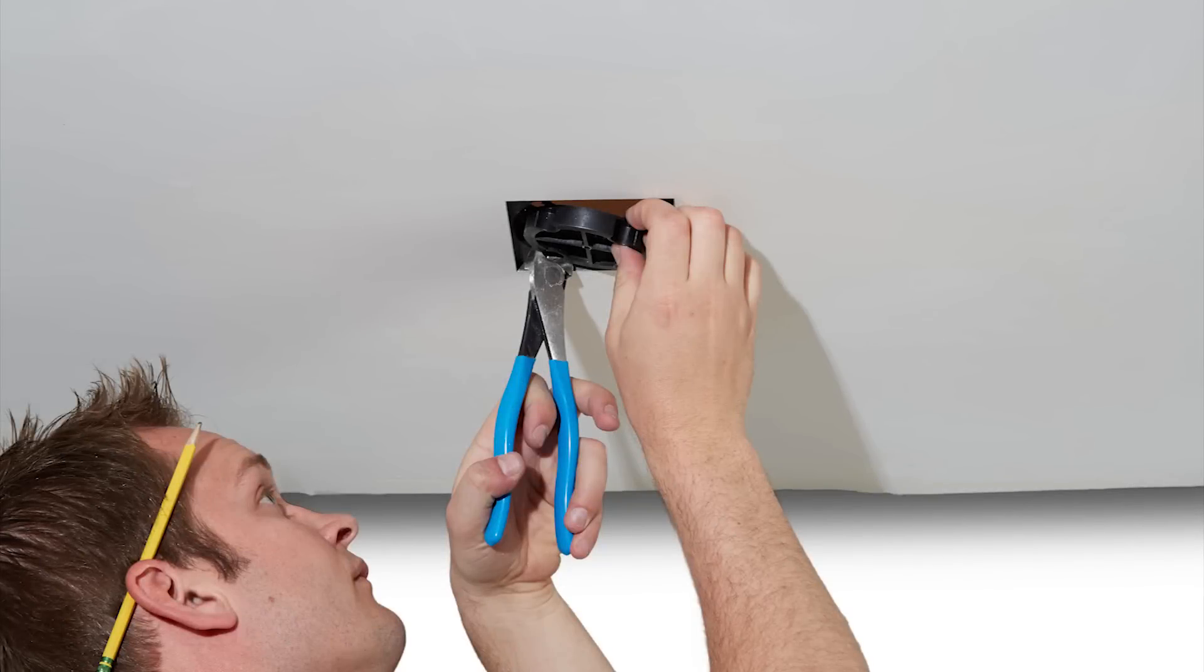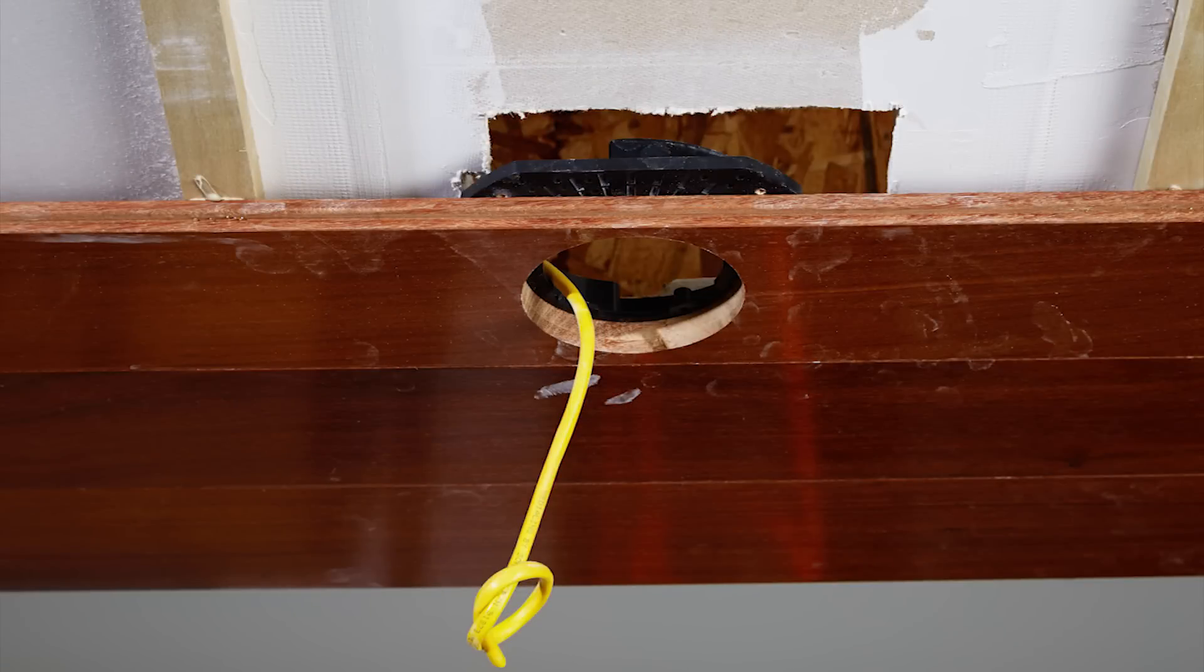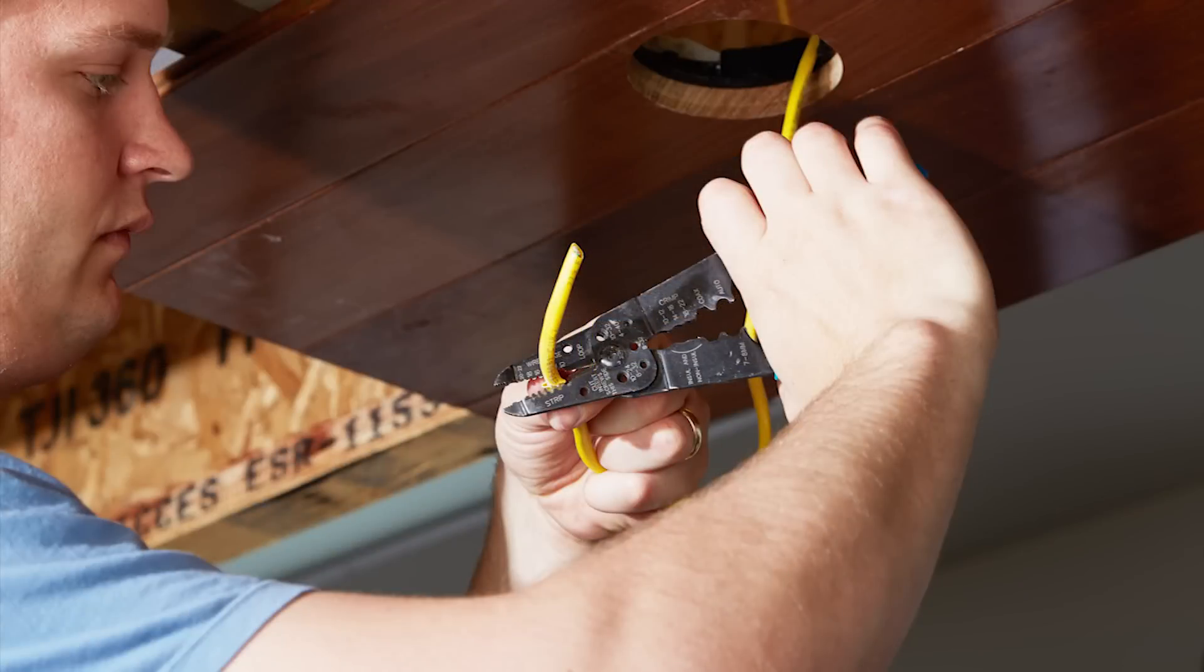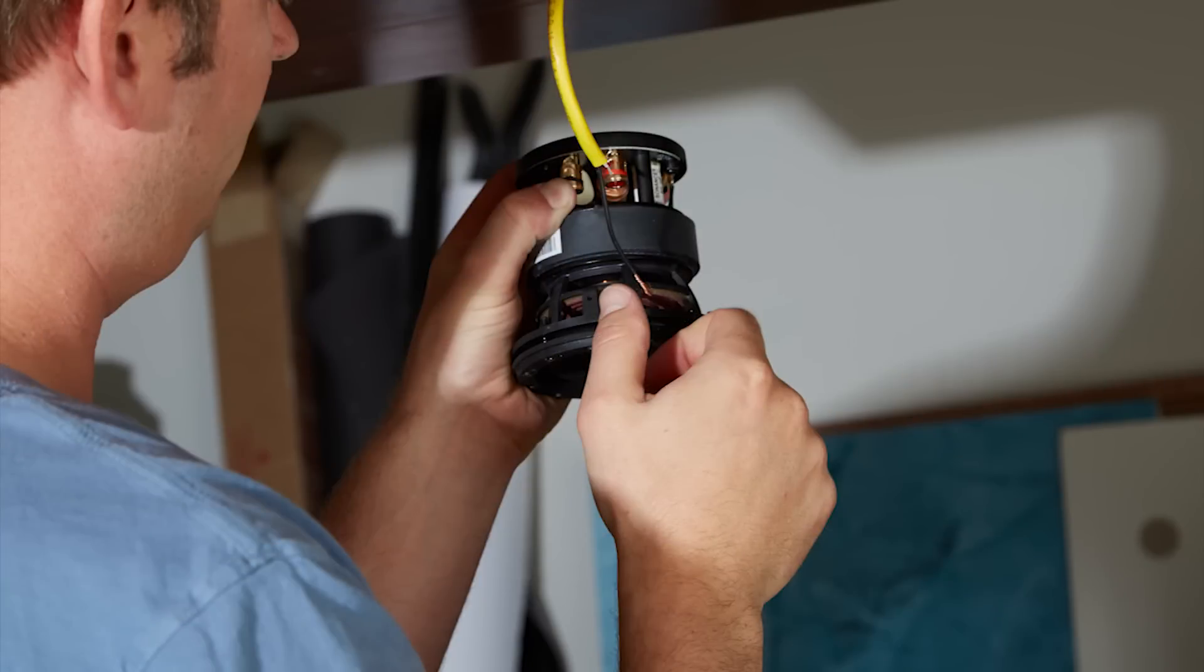Clip the tabs holding the shield bracket. Remove the bracket from the front of the enclosure. Carefully feed the speaker cable through the opening and connect to the speaker terminals. Once the speaker cable is connected, gently feed the speaker through the opening.